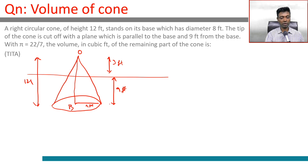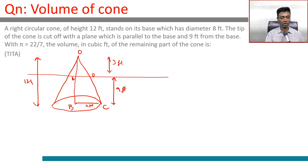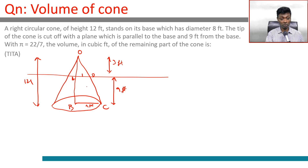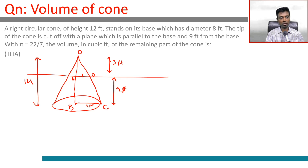Triangle OAD is similar to triangle OBC. OA is 3, OB is 12, and OC (radius) is 4, so AD should be 1. The height decreases by a factor of 4 — from 12 to 3 — so the radius also decreases by a factor of 4, going from 4 to 1. The ratio is 3:1, which corresponds to 12:4.